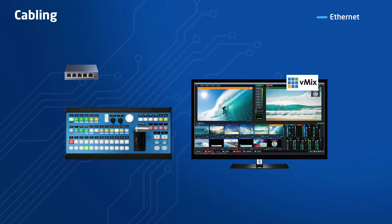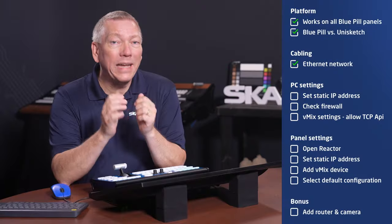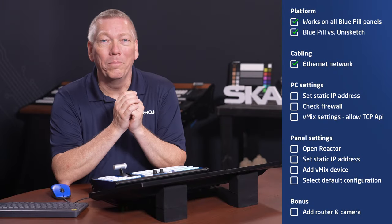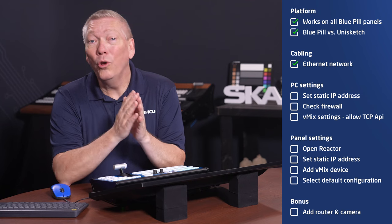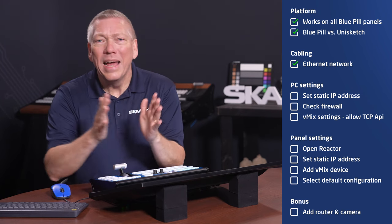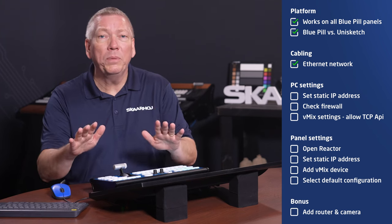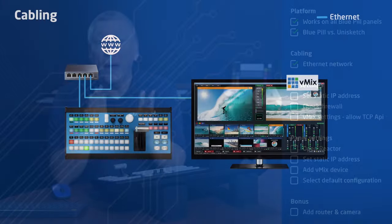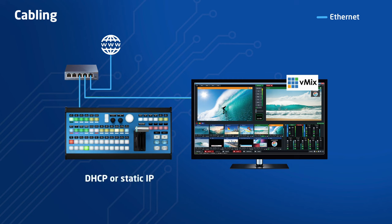First up is the cable connection. I've connected the SkaHoy panel and the vMix PC to an Ethernet switch. The switch has Power over Ethernet, so it also powers the panel. I also have internet connection. This is needed during setup for downloading the vMix device core to the panel. After setting up, you no longer need internet connection. The panel and computer must be in the same network range. The panel can use DHCP or a static IP address, but I mostly use a static address so as not to rely on a DHCP server.